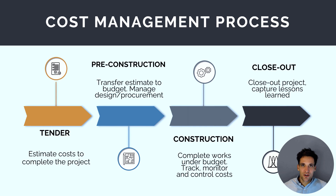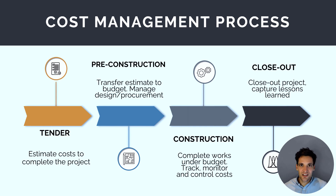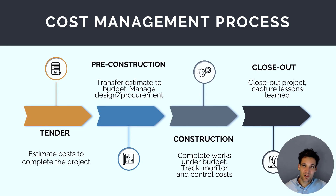We map out the construction cost management process across the stages and life cycle of a construction project. We start with the tender phase where we estimate the cost to complete a project so we can secure work from a client. We then move into the pre-construction phase where we take this estimate and transfer it into a budget, and manage any design and procurement activities to ensure we achieve our budget. We then start construction and manage the works, monitoring and controlling costs so we're doing the work for less than what we originally estimated. When we finish, we close out all cost control activities and capture lessons learned to feed back into the process and improve our construction estimating function.